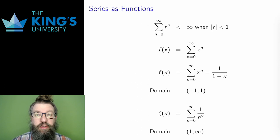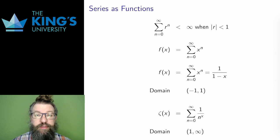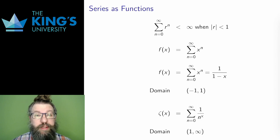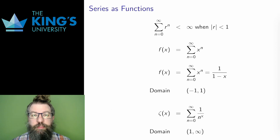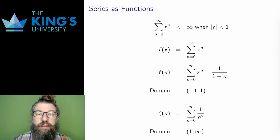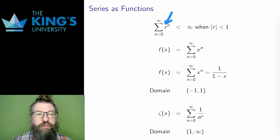In the previous week, the two main series for comparison were the geometric series and the zeta series. Both of these series had a parameter — the common ratio for the geometric series and the exponent labeled p for the zeta series. Now I want to rethink those two examples. Instead of thinking of them as having a parameter, why don't I think of them as functions?